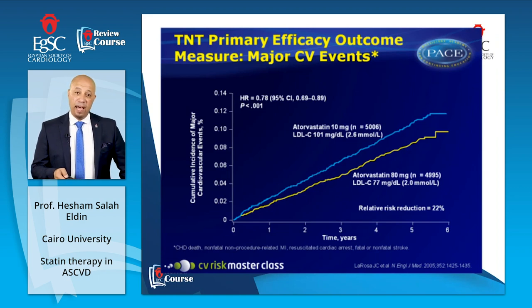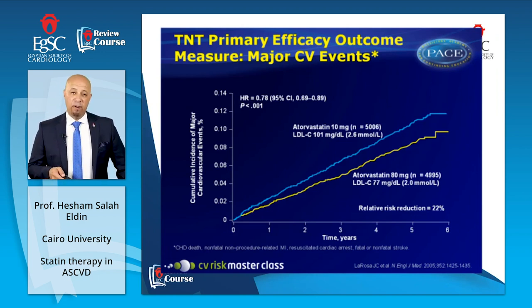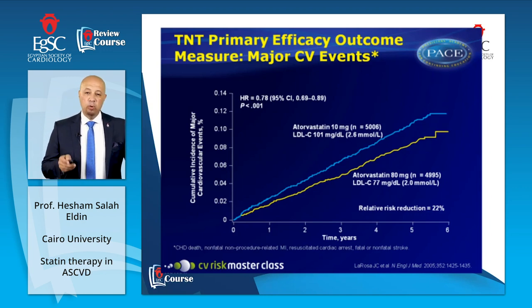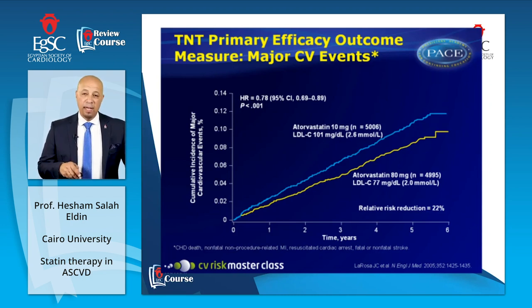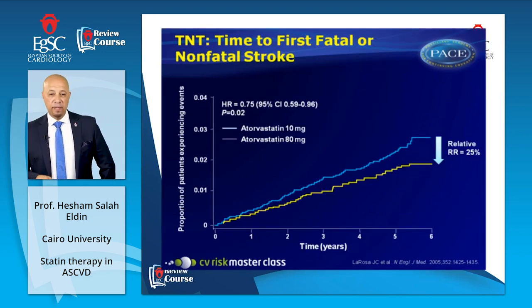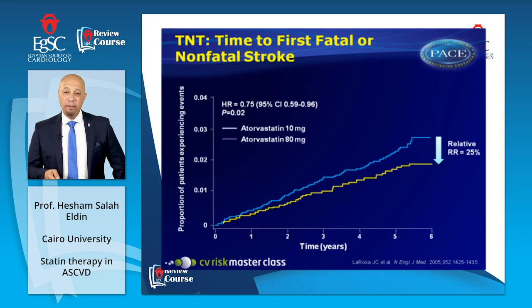For patients with stable — or chronic — coronary artery disease, data from the TNT trial, which included almost 10,000 patients, showed LDL cholesterol went down to 77 mg/dL in the atorvastatin 80 mg arm versus 101 mg/dL on atorvastatin 10 mg. This translated to a 22% relative risk reduction in cumulative major cardiovascular events, and a 25% reduction in time to first fatal or non-fatal stroke in favor of high-intensity statin.